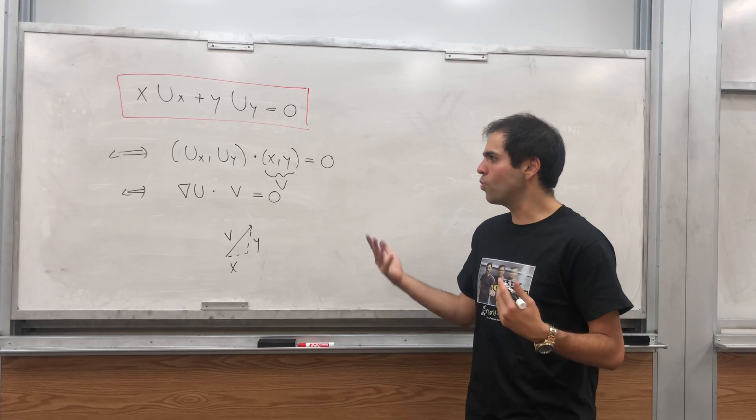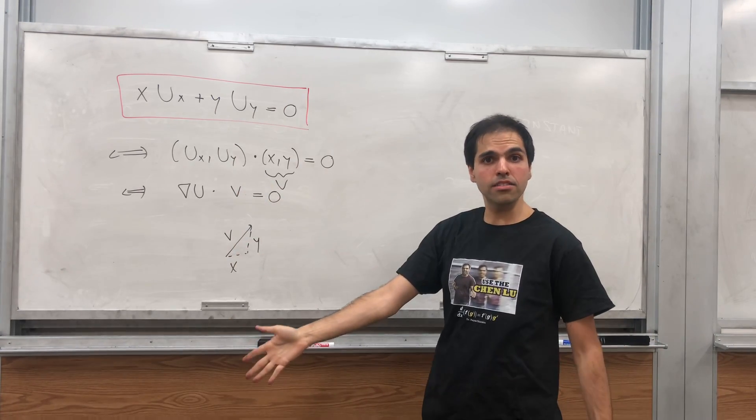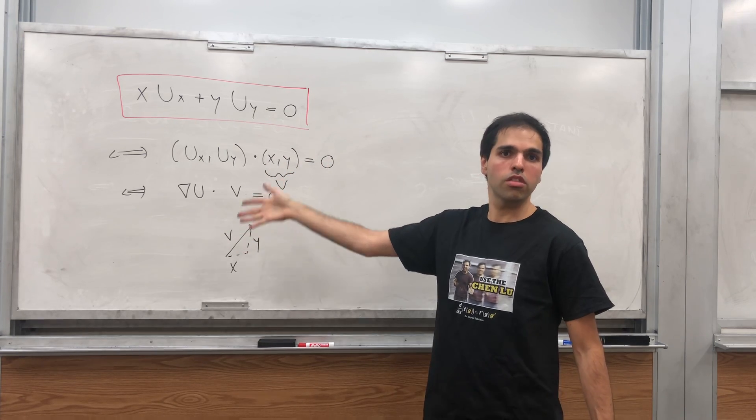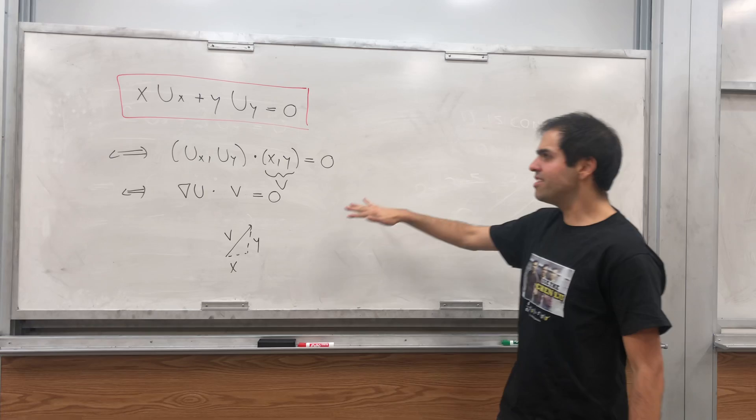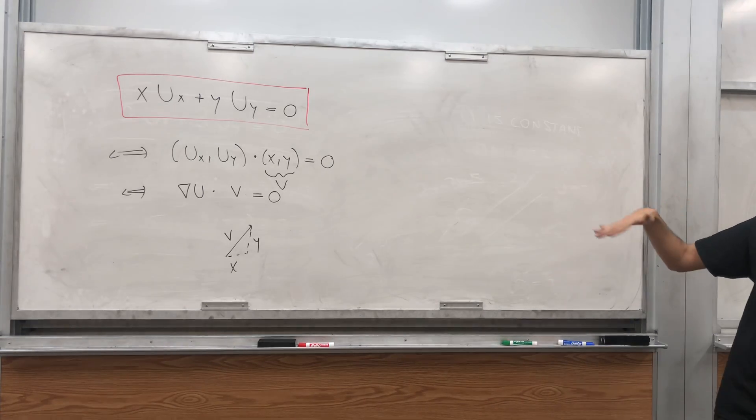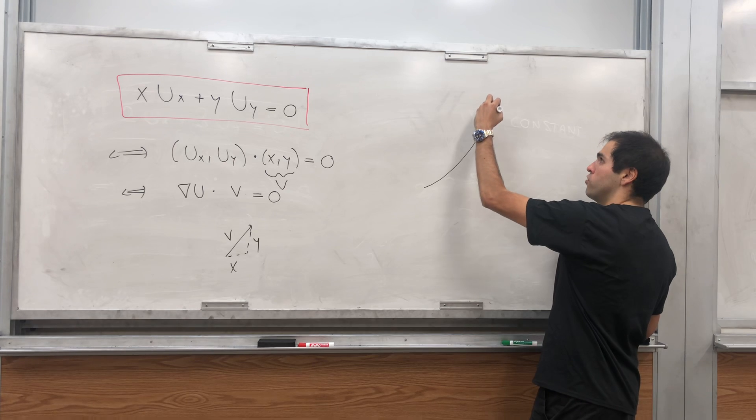So, before, what we noticed was u is constant along lines with slope three over two or something. Here, what we get is that u is not constant on lines, but this time, it's constant on curves.